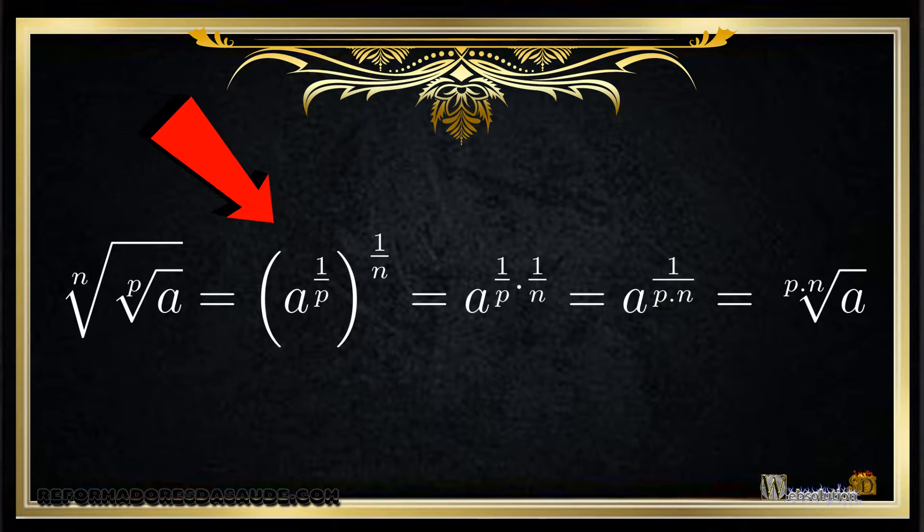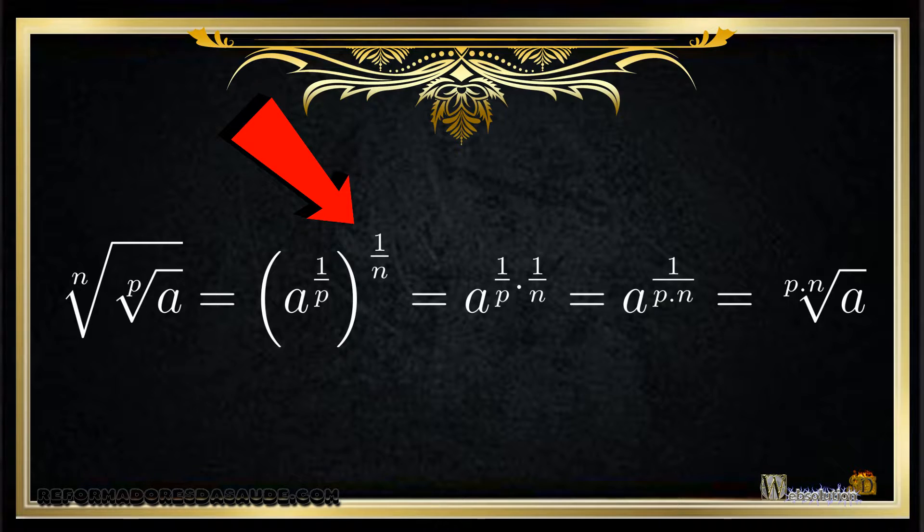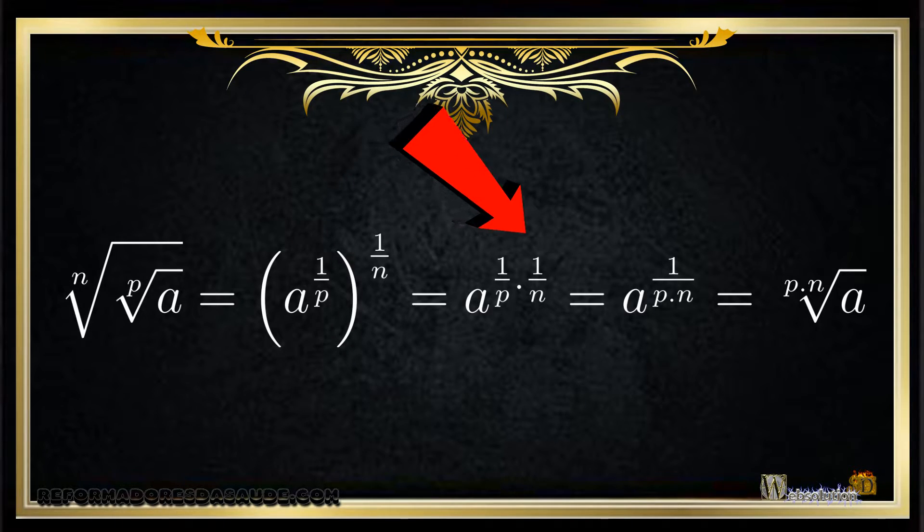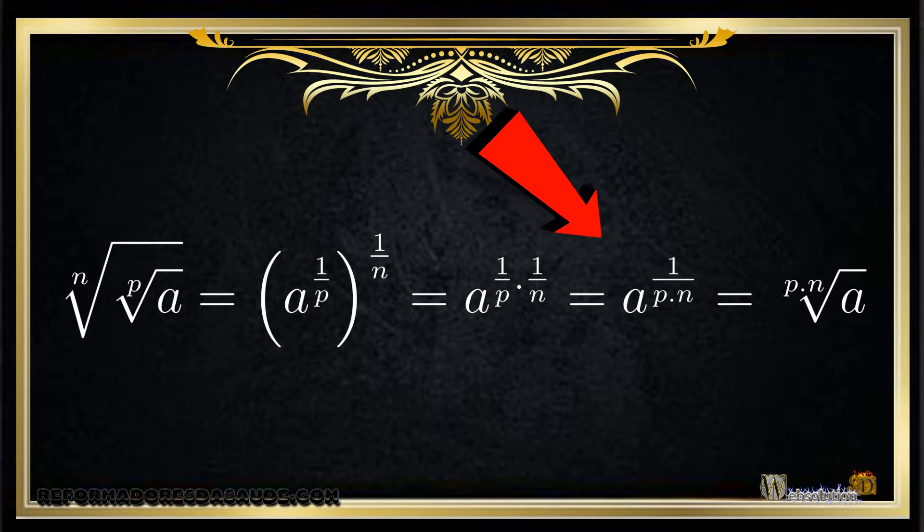Again we know that all radication is a divided exponent. So we have a to the 1 over p, everything to the 1 over n. Remember we multiply the exponents, and so we have a to the 1 divided by p times n, which is the root p times n of a.